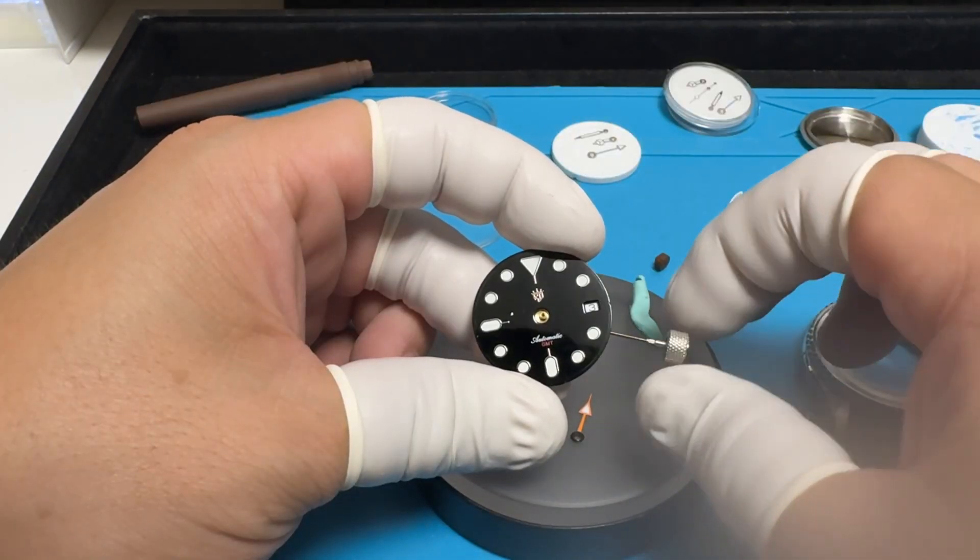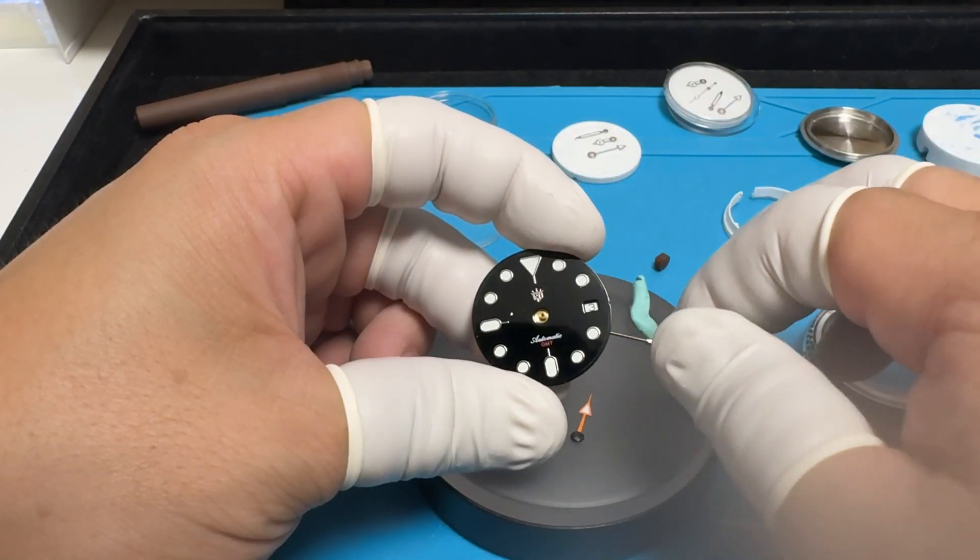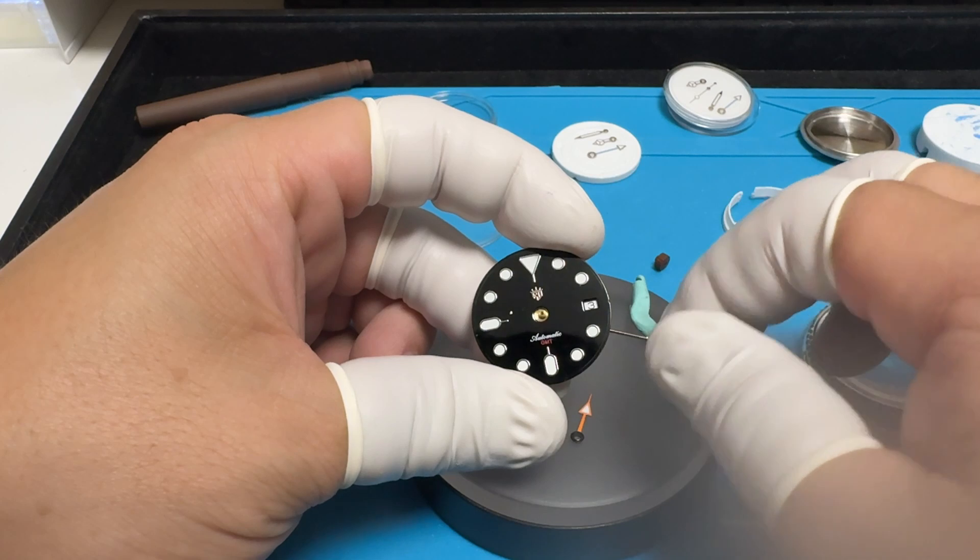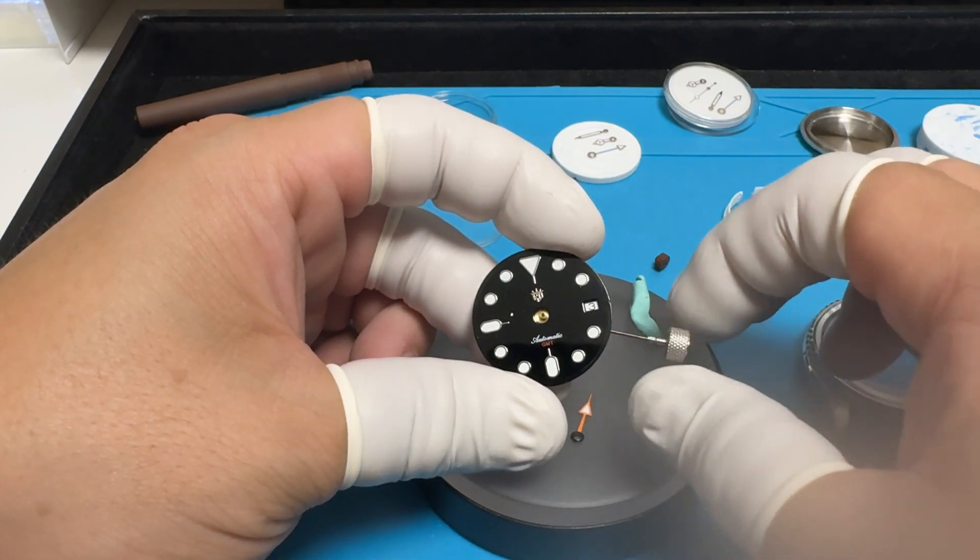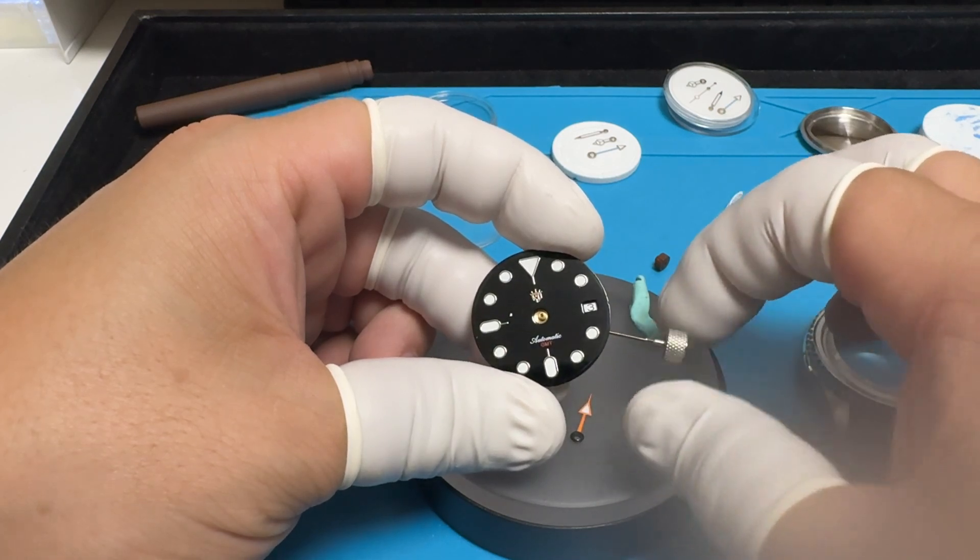Next we're gonna mount the 24-hour hand or the GMT hand. Just turn the stem or crown until it flicks over to the next day, which means that it will be midnight.